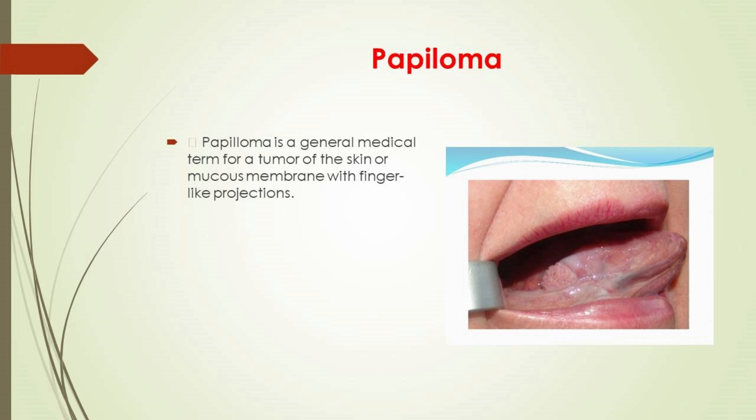Papilloma is a general medical term for a tumor of the skin or mucous membrane with finger-like projections. Papillomas are either pedunculated or sessile growths on any surface of the oral mucous membrane. Multiple papillomas occur in Cowden syndrome and Down syndrome. Treatment is surgical excision.